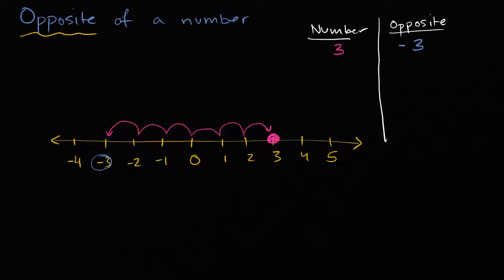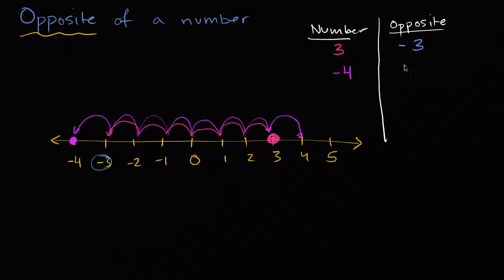Now what if your number is negative? Let's say the number negative four — what's the opposite of that? I encourage you to pause the video and try to think about it on your own. Well, negative four is right over here; it is four to the left of zero — one, two, three, four. So its opposite is going to be four to the right — one, two, three, four. It's going to be positive four. So you're probably starting to see a pattern here: the opposite of a number is going to be the opposite sign of that number. If you have positive three, its opposite is negative three. If you start with negative four, its opposite is positive four.